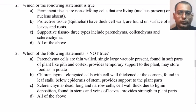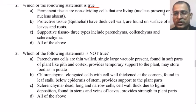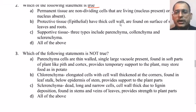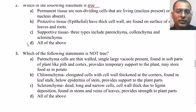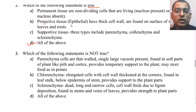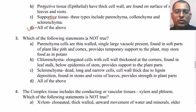Next question: which of the following is true? Permanent tissue — non-dividing cells that are living (nucleus present) or dead (nucleus absent); protective tissue (epithelial) — thick cell wall, found on the surface of stem, leaves and roots; supportive tissue — three types including parenchyma, colenchyma, and sclerenchyma; all of the above. The right answer is all of the above.